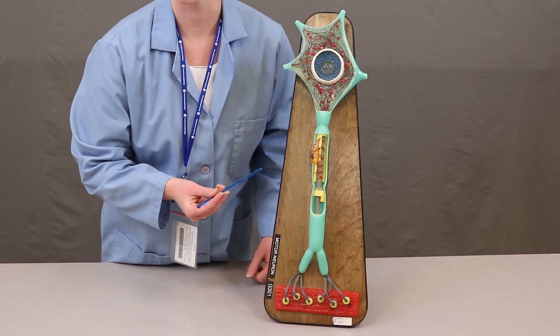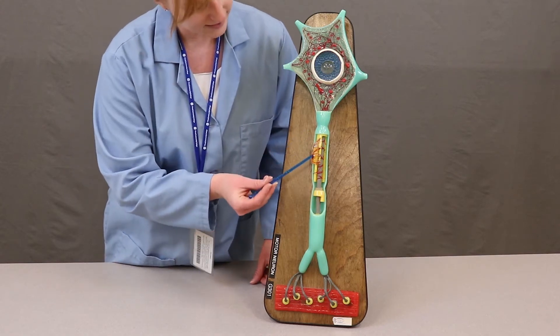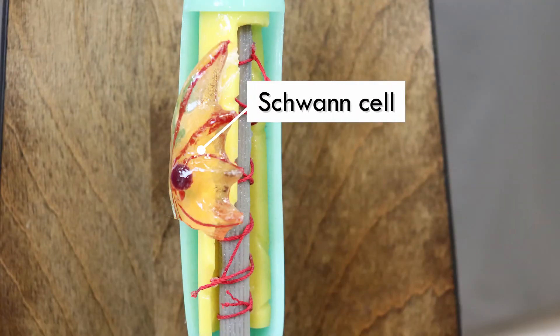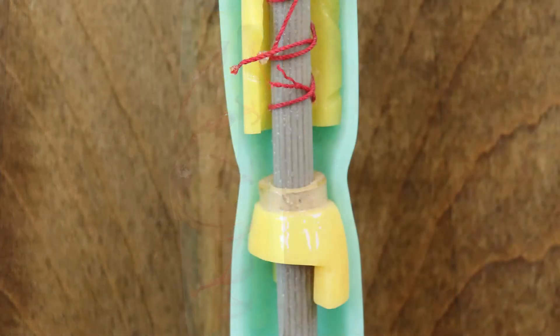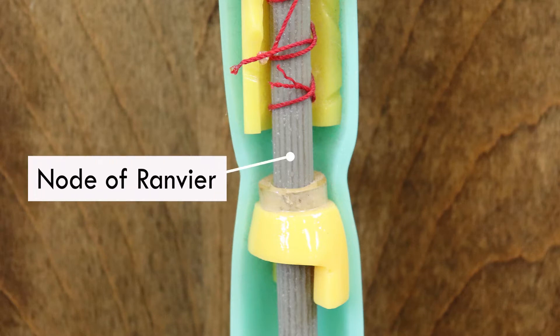A couple of other things you'll notice about the axon: here we have a Schwann cell that is creating the myelin sheath, which is the yellow material on this model. The myelin sheath is a fatty substance that protects and electrically insulates the axon to help speed up the conduction of nerve impulses. Between one Schwann cell and the next, we have a little gap called the node of Ranvier, which is important in the conduction of nerve impulses.